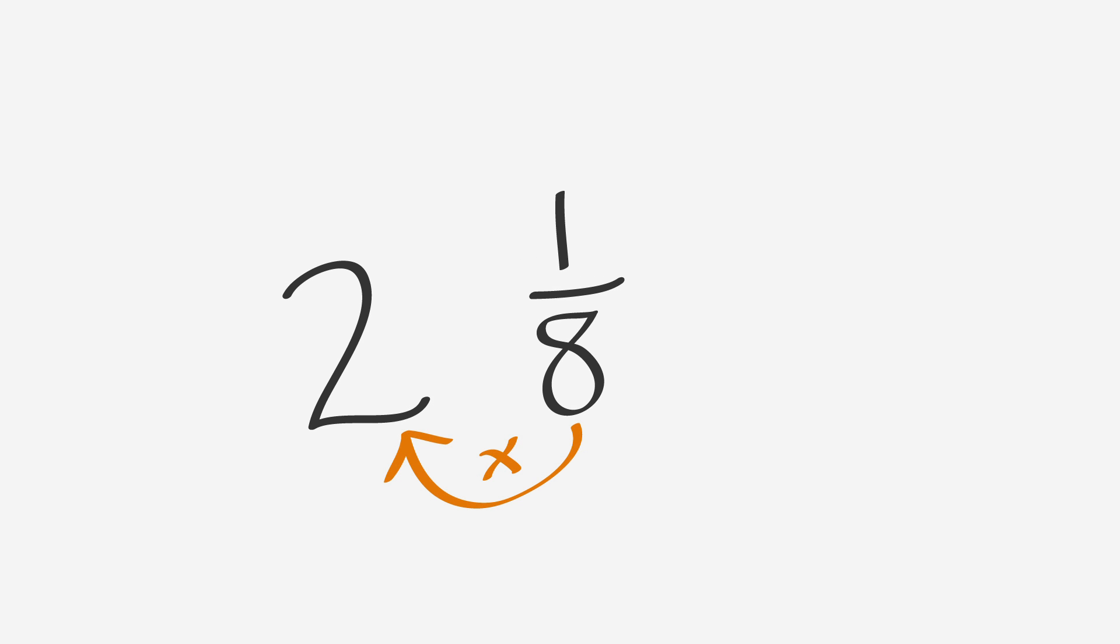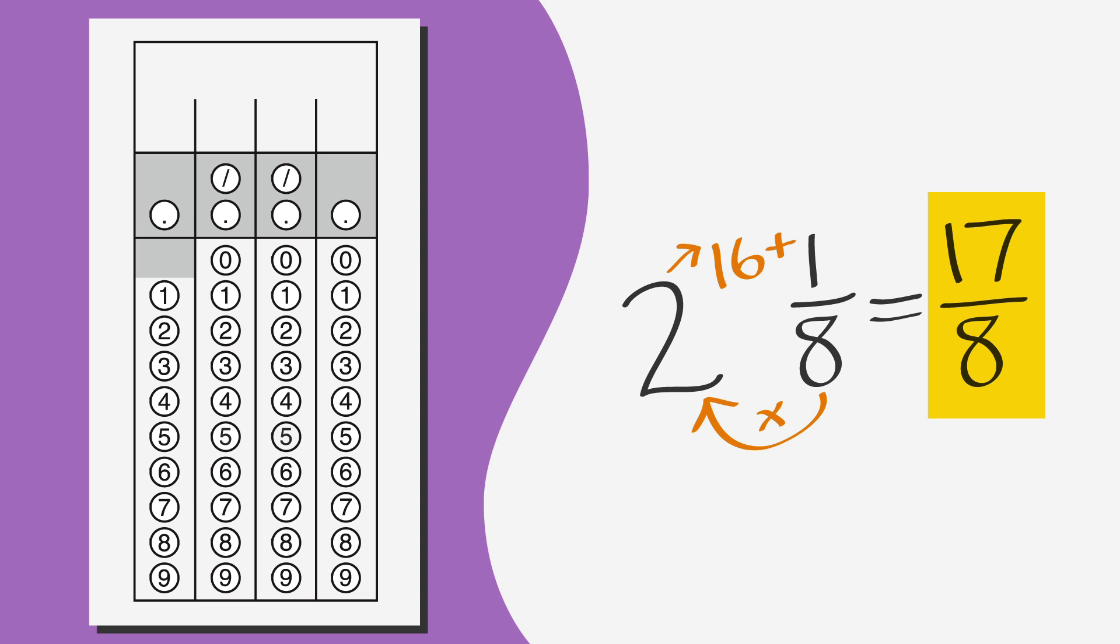Convert your fraction by multiplying the denominator, 8, by 2, to get 16. Then add the numerator, which is 1, for a total of 17. Your denominator remains the same. So your improper fraction is 17 eighths. This will be written on the answer sheet as 1 7 slash 8.